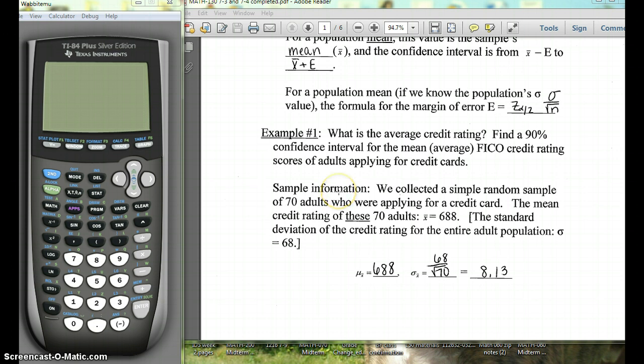Okay, so to do this confidence interval on our calculator we're going to hit stat, go over to tests, and we're going to go down to z interval. So you can see that's number 7.